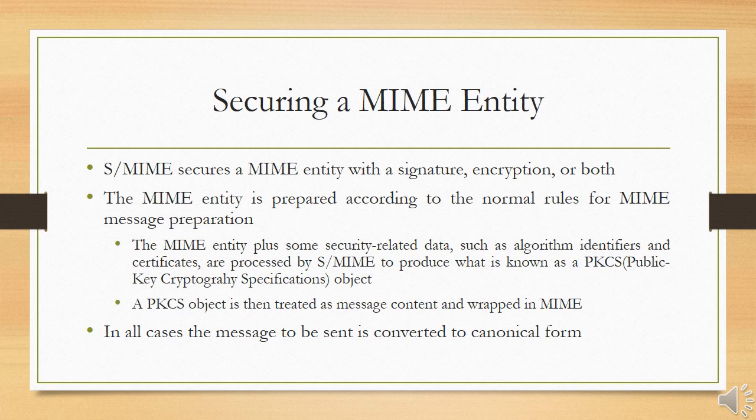The MIME entity plus some security-related data — such as algorithm identifiers and certificates — are processed by S/MIME to produce what is known as a PKCS object. A PKCS object is then treated as message content and wrapped in MIME, provided with appropriate MIME headers. In all cases, the message to be sent is converted to canonical form; for a given type and subtype, the appropriate canonical form is used for the message content, and for a multi-part message, the appropriate canonical form is used for each subpart.